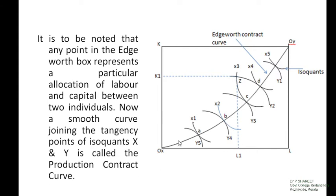We can explain the second marginal condition or efficiency in production with the help of the Edgeworth box diagram. Here, the production function is shown with the help of isoquants. Two producers are producing commodities X and Y respectively, and two factors are used, that is labor and capital. The production function of the first producer is shown with the help of isoquants X1, X2, X3, X4, and X5. Similarly, the production function of the second producer is shown with the help of isoquants Y1, Y2, Y3, Y4, and Y5. By connecting the tangency points of isoquants where slopes of isoquants are equal, we will get the Edgeworth contract curve of production. On every point on the Edgeworth contract curve of production, the slopes of isoquants are equal. Thus, the second marginal condition is satisfied on each and every point on the production contract curve.